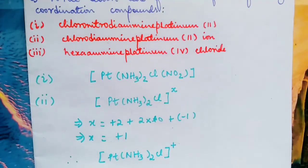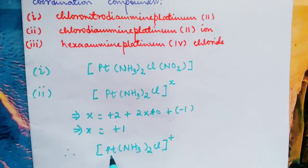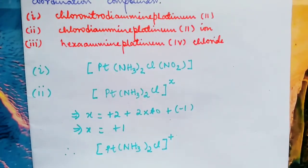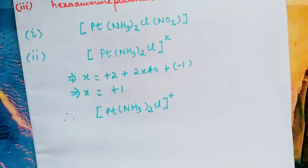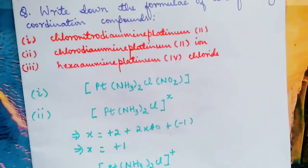Therefore platinum, what is the ion? +1, or we write it only in this way. Hence this one is chlorodiamineplatinum(II) ion. We come to number three. For number three, you have to identify...